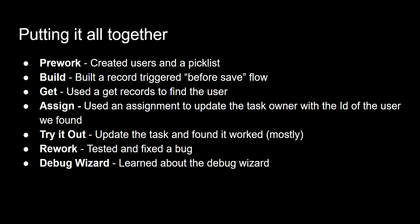The next thing we did is we built a record-triggered before save flow. It's a before save flow when you optimize for fast field updates. We then used a Get element to get records to find the user that we wanted the task to be updated for. Then we used an Assignment element to update the task owner with the ID of the user that our Get Records found.